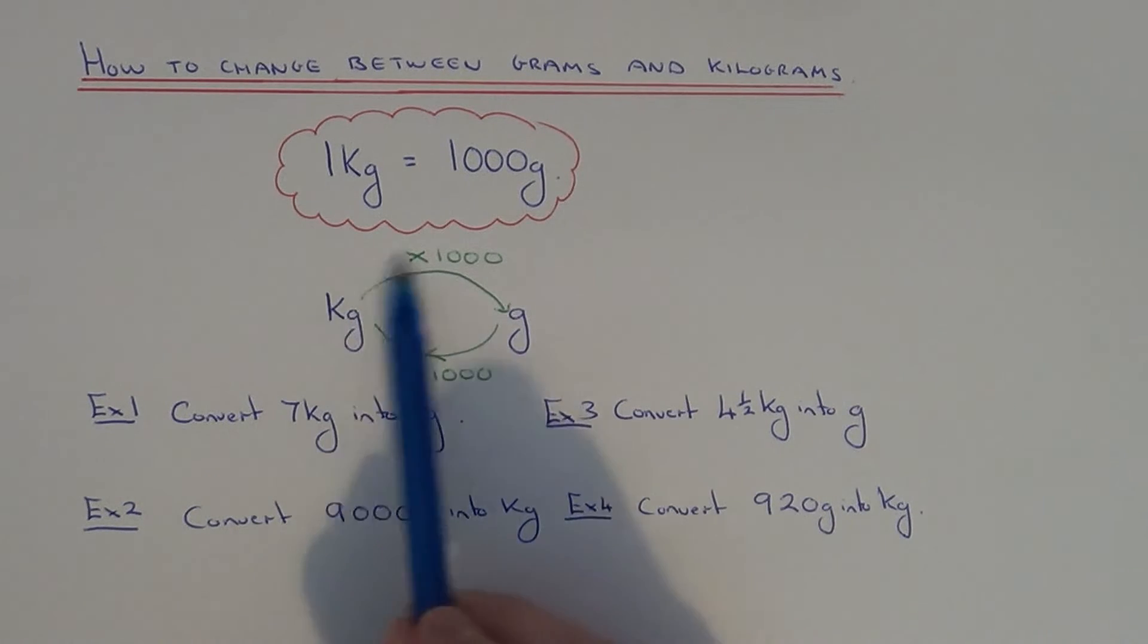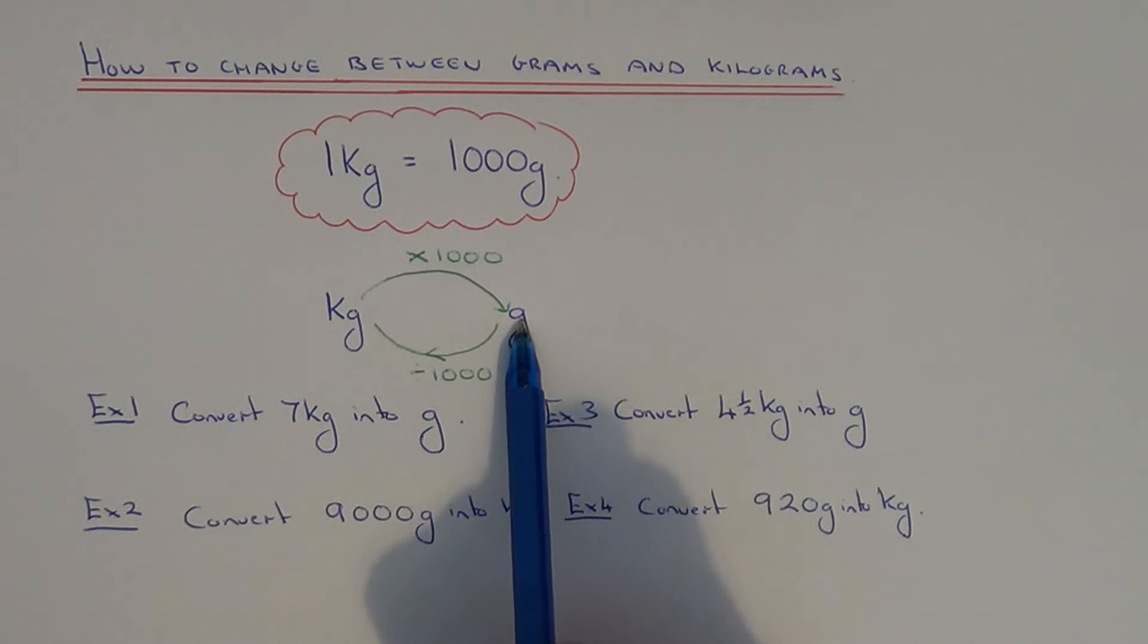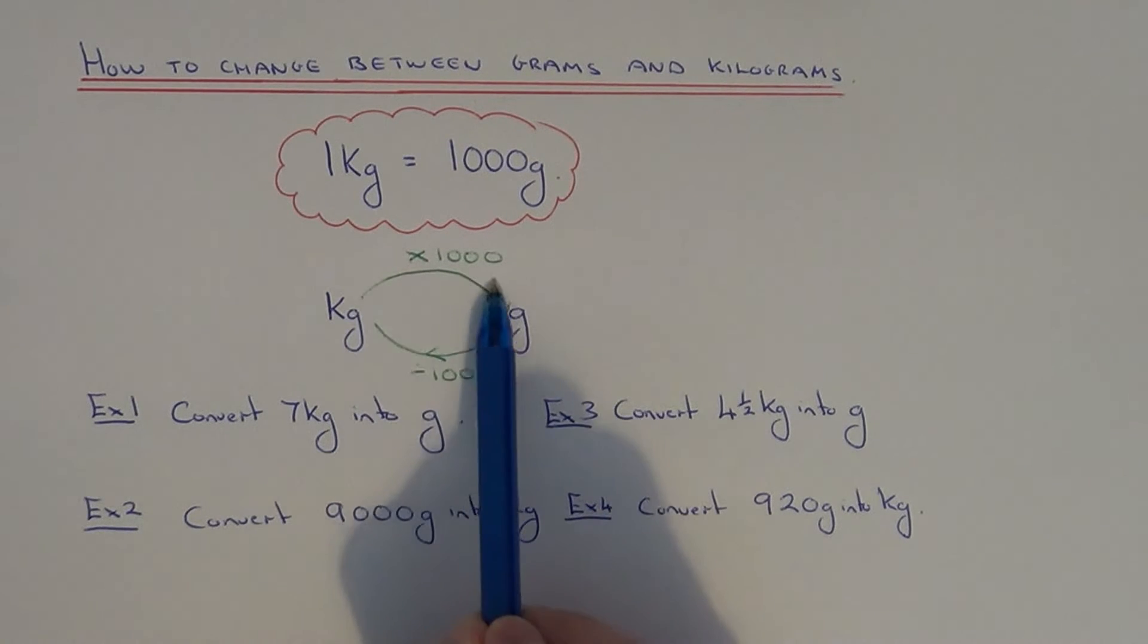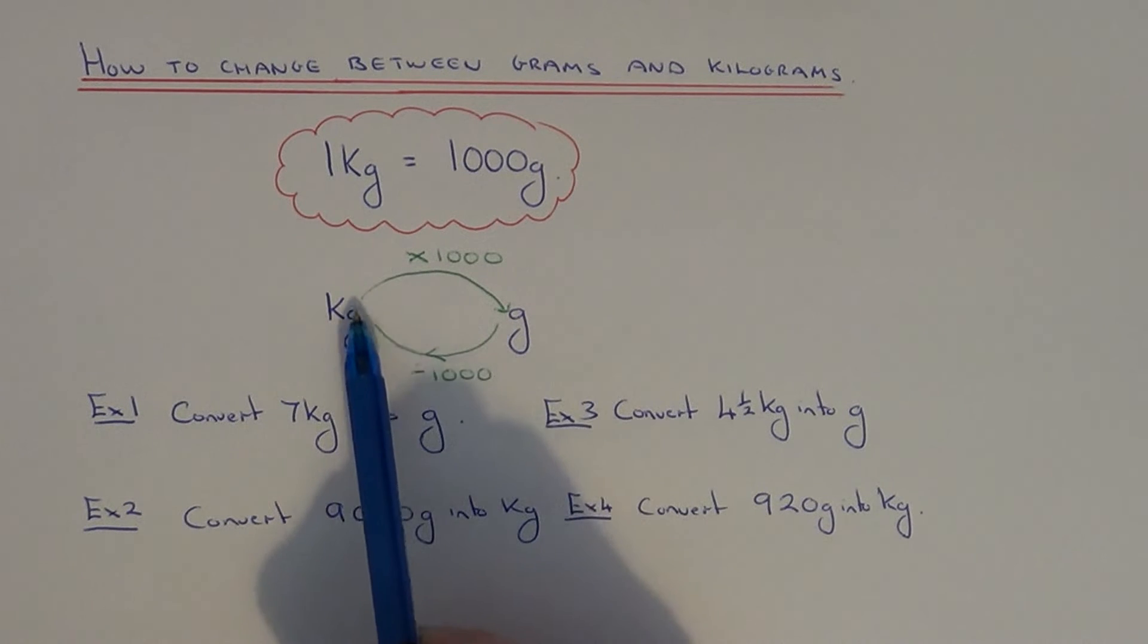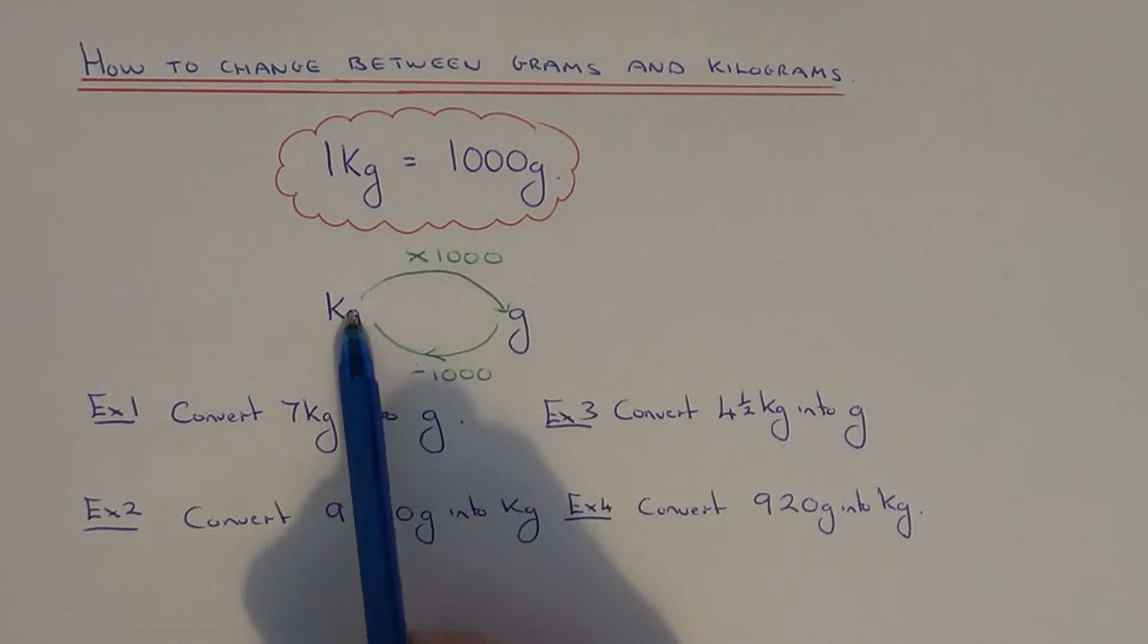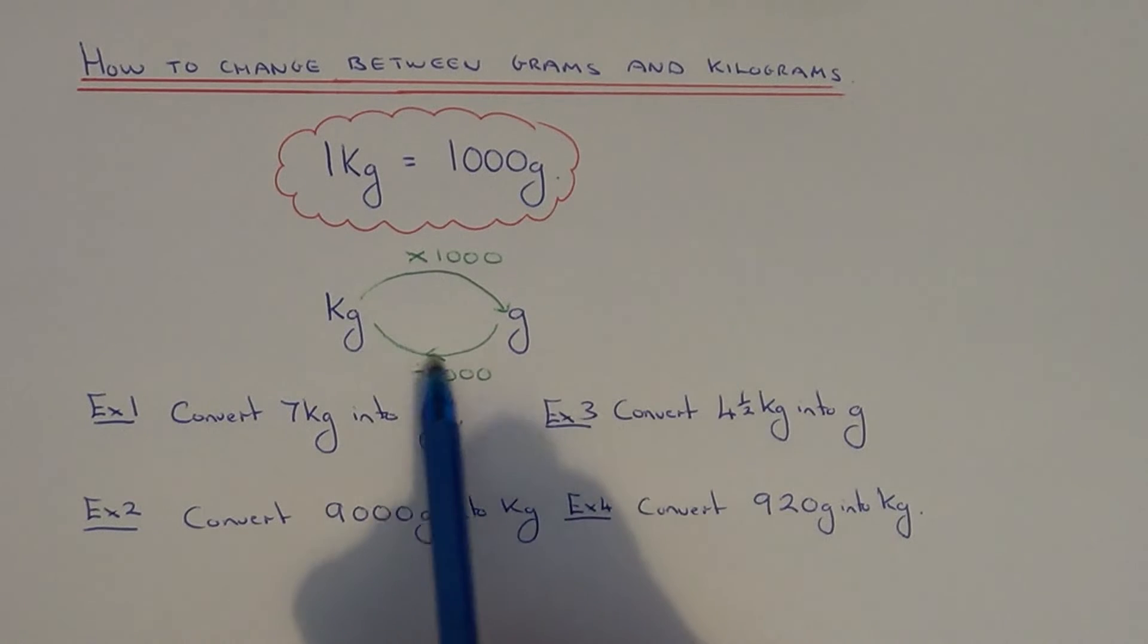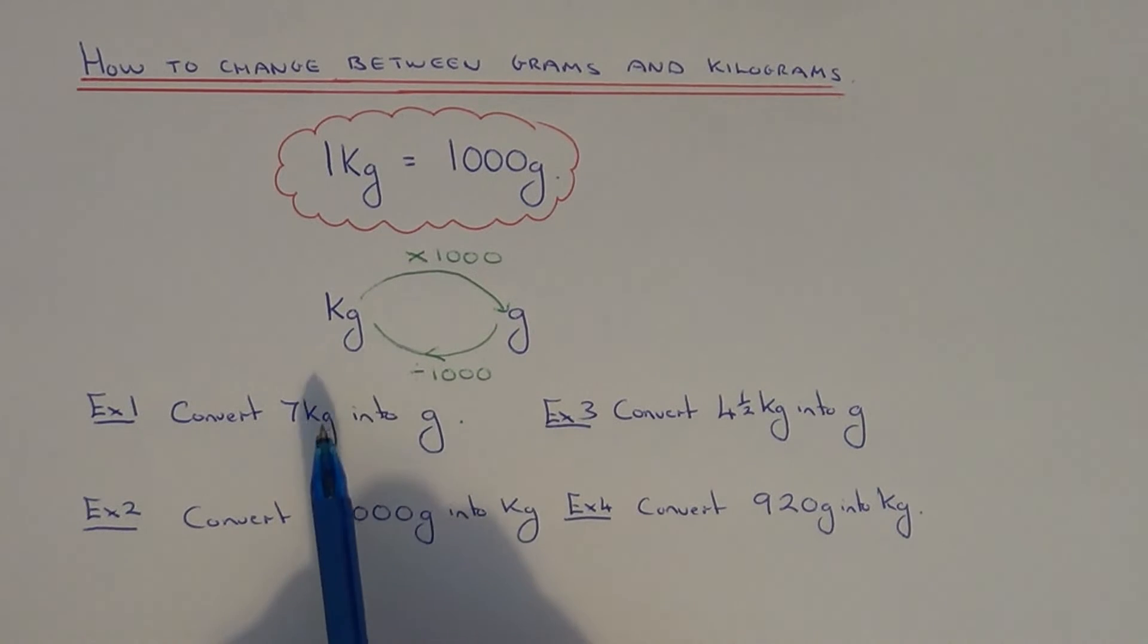So if you look at the little chart that we have here, if you're converting the measurement from kilograms into grams, you're going to multiply the number by a thousand because when the number is in grams it's always a bigger number. And if you're converting back from grams into kilograms, you divide by a thousand because the amount in kilograms will be a smaller number.